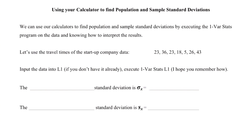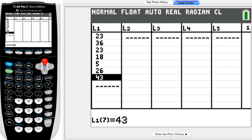So let's go back to the travel times from the examples that we've been working with. This would be the full population of our seven pieces of data. We're going to go ahead and throw that into L1 again if you don't already have it there. I've got my data in L1 again.